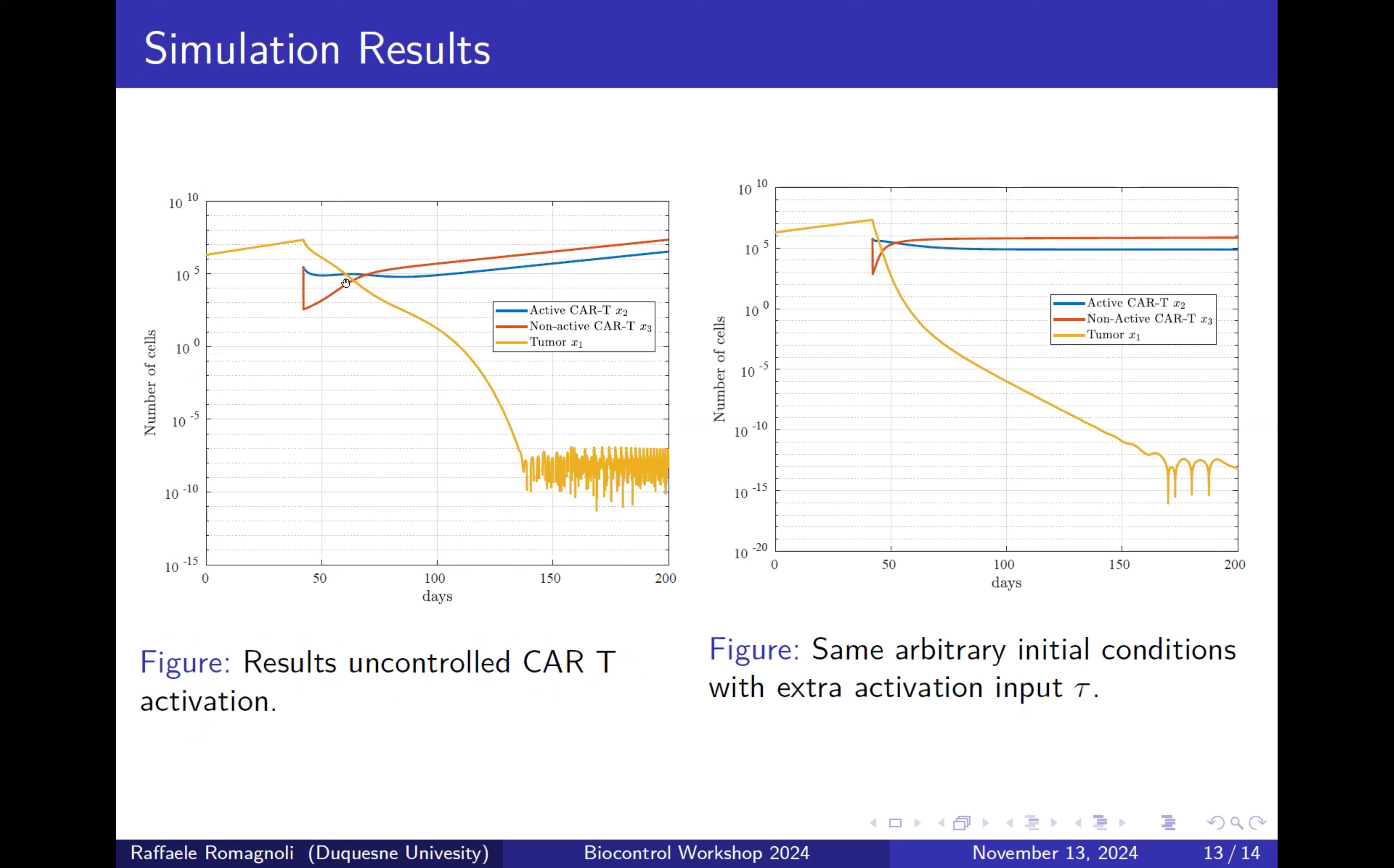This is what we obtain in the case we have an uncontrolled CAR-T cell activation, which is potentially toxic for the entire organism. But then the level of tumor clearance is almost the same that we get with the controller tau.